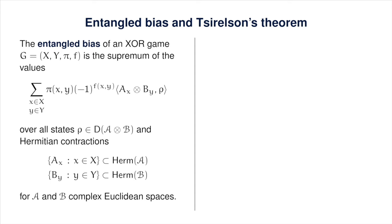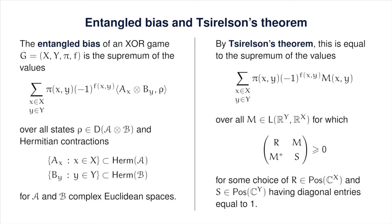Tsirelson's theorem tells us that the entangled bias is the supremum over all values taken by the formula on the right-hand side, where M is free to range over all real matrices with rows indexed by X and columns indexed by Y, such that there exist matrices R and S having diagonal entries equal to 1 that make the entire block matrix positive semi-definite. This characterization of the entangled bias is very well suited to a semi-definite programming formulation, and explaining exactly what this SDP looks like will be the first order of business for the lecture.